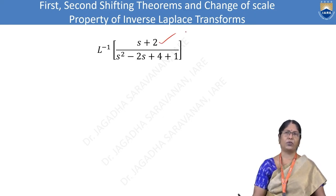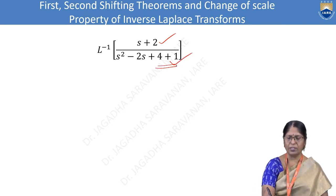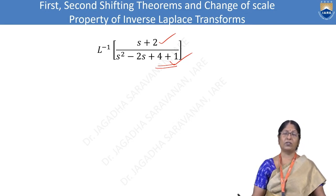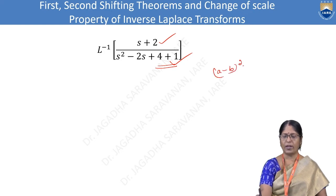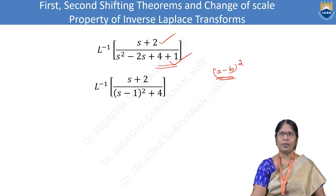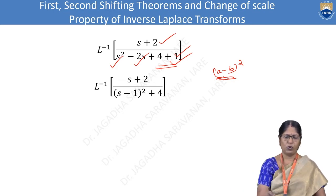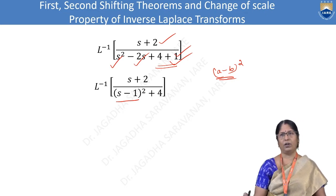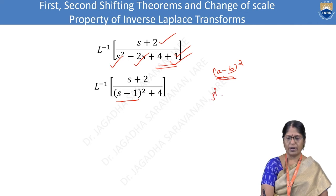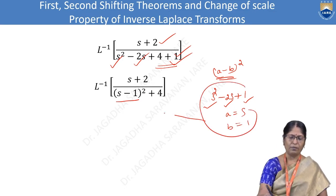We are going to split the denominator conveniently. Looking at s²-2s+5, we recognise the pattern a²-2ab+b². The 5 is split as 4+1, so s²-2s+1+4. The first three terms s²-2s+1 form (s-1)², because a is s and b is 1. So the denominator becomes (s-1)²+4.